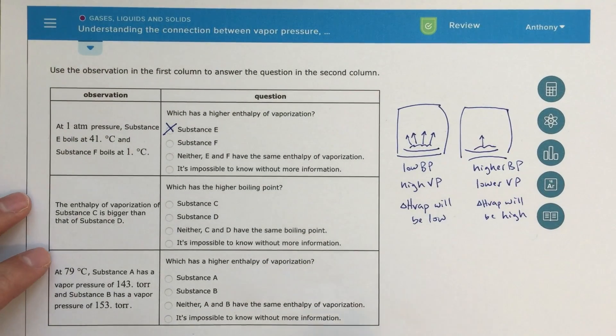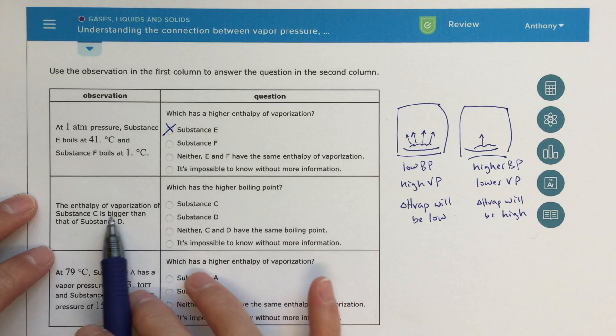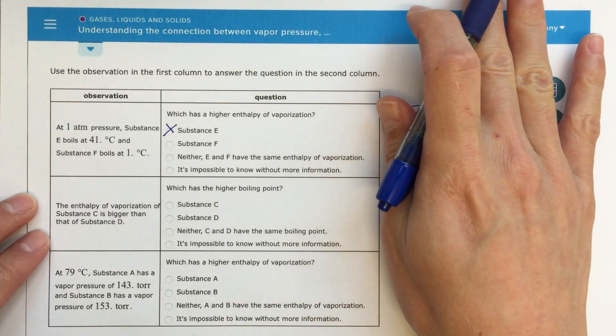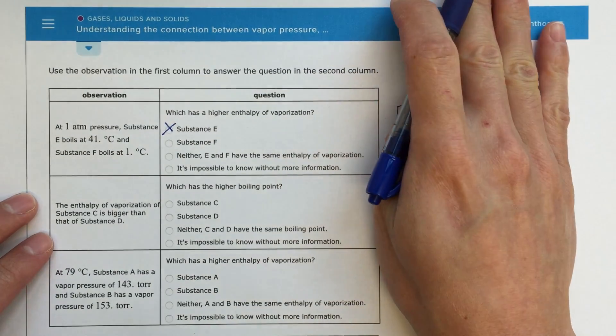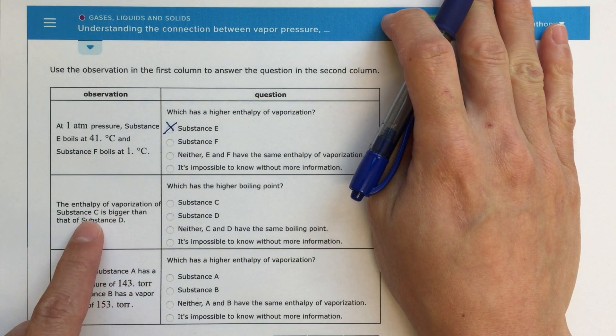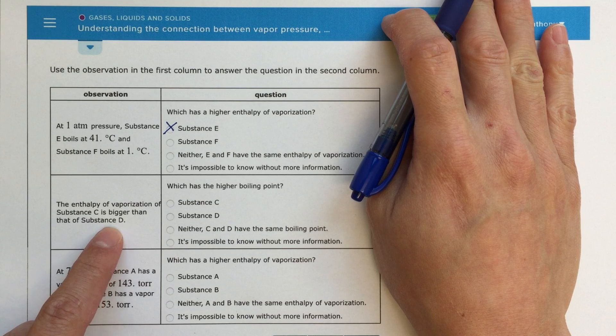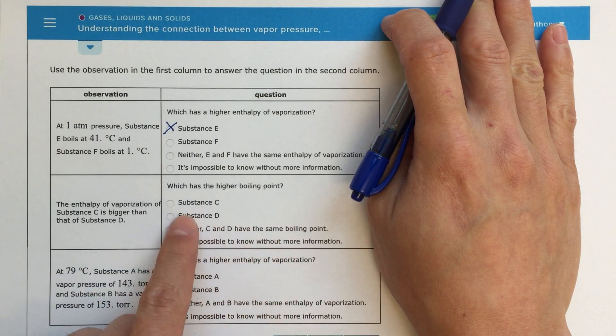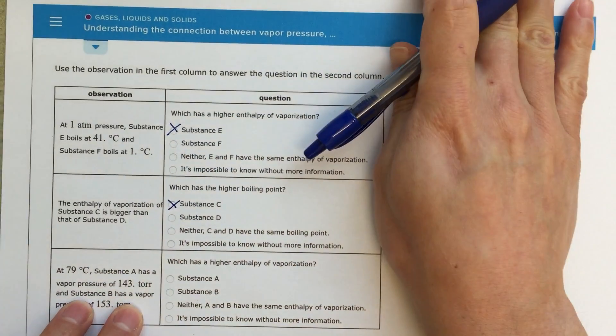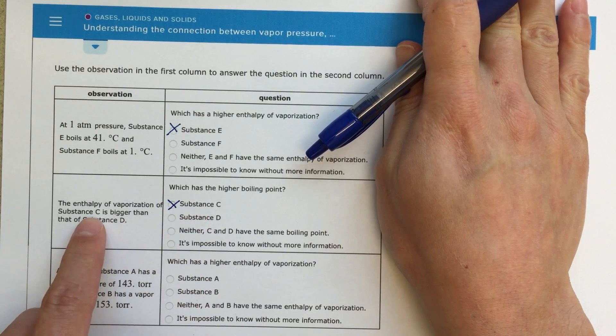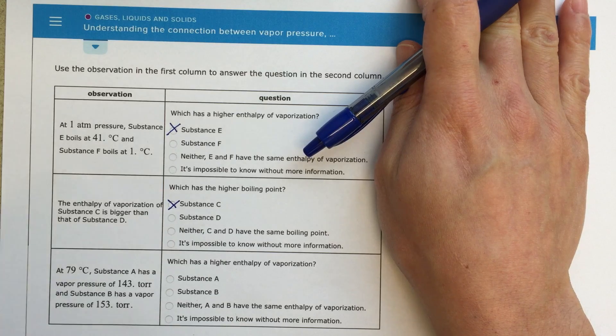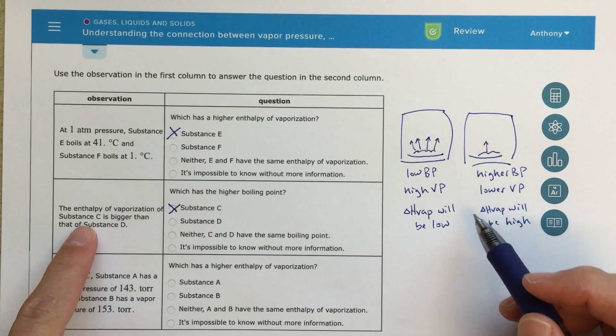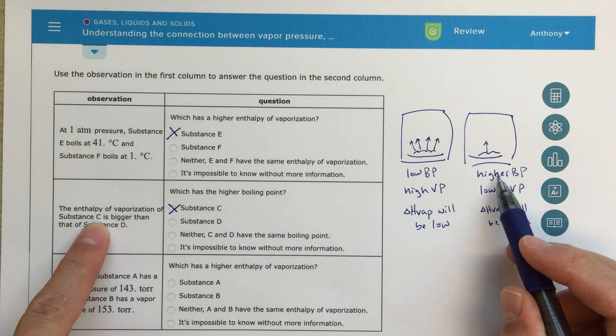So enough ranting. I'll go ahead and answer the rest of the questions. The enthalpy of vaporization of substance C is bigger than substance D. So again, the enthalpy of vaporization. Well, actually, let's not think about this. Let's cover this up and see if we can come up with this answer on our own. So it says the enthalpy of vaporization of substance C is bigger than that of substance D. So it's going to be harder to make substance C boil. So which has a higher boiling point? I'm going to go for substance C because substance C is going to be harder for substance C to boil because it's got a higher enthalpy of vaporization. So let's do the last one. Well, we can just double check. Enthalpy of vaporization is bigger over here. Higher boiling point would be the same one.